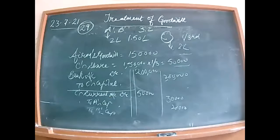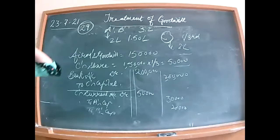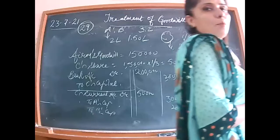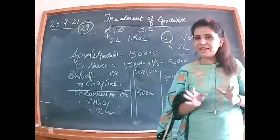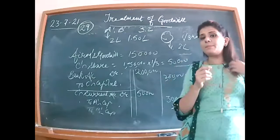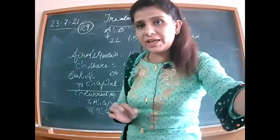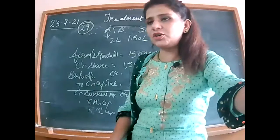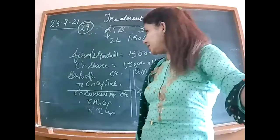Repeating the rule: if the question says the shortfall in goodwill shall be debited to the new partner's current account, do so. But if nothing is written in the question, we do NOT debit the current account when there is no mention. Keep this rule in mind. Now read illustration 30.